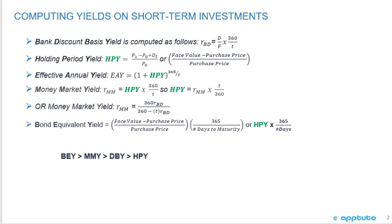Therefore, the bond equivalent yield is going to be bigger than the money market yield because the numerator is bigger. The rule is: bond equivalent yield is greater than money market yield, which is greater than bank discount yield, which is greater than holding period yield.